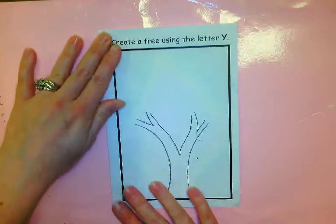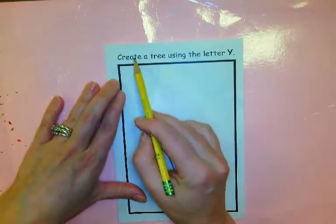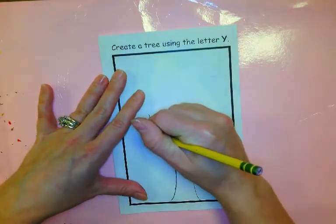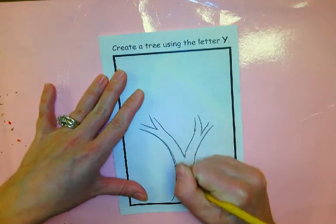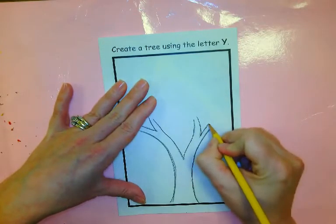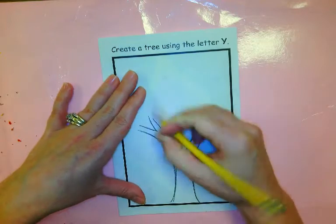On the fold like that. Now I've already started part of your Y tree. It says create a tree using the letter Y, so I'm going to go ahead and trace over, pressing hard with your sharpened pencil. Be careful to not break the points of your pencil.